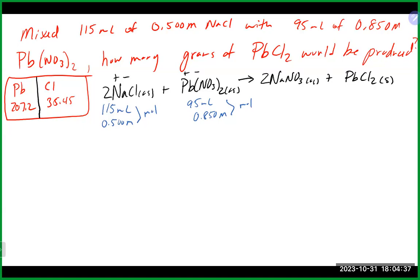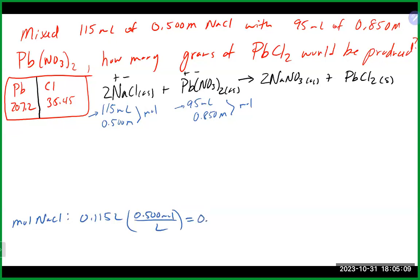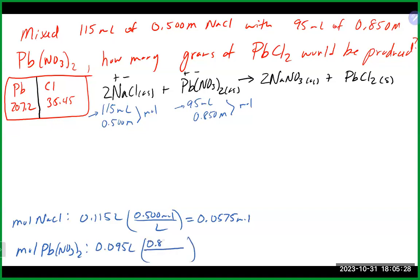Analyzing the information: we have 115 mL of 0.5 M sodium chloride and 95 mL of 0.85 M lead(II) nitrate. Because we can get moles from both reactants, this IS a limiting reagent problem. Convert milliliters to liters: moles of NaCl = 0.115 L × 0.5 mol/L = 0.0575 mol. Moles of Pb(NO₃)₂ = 0.095 L × 0.85 mol/L = 0.0808 mol.